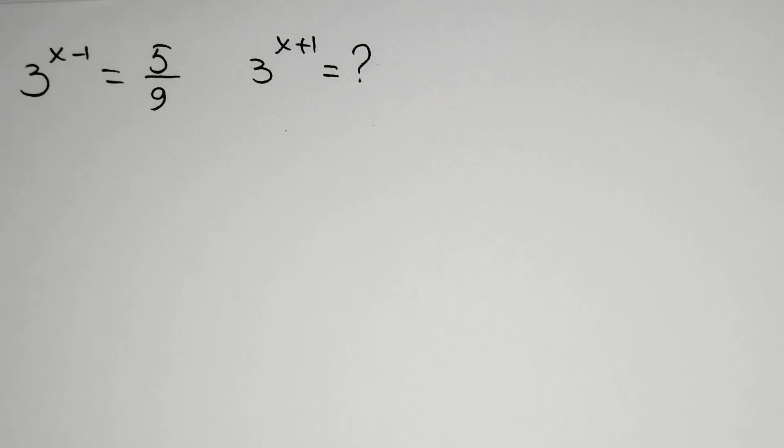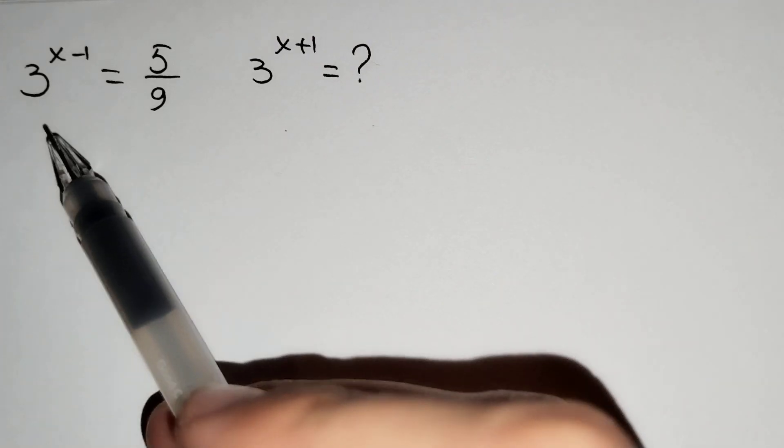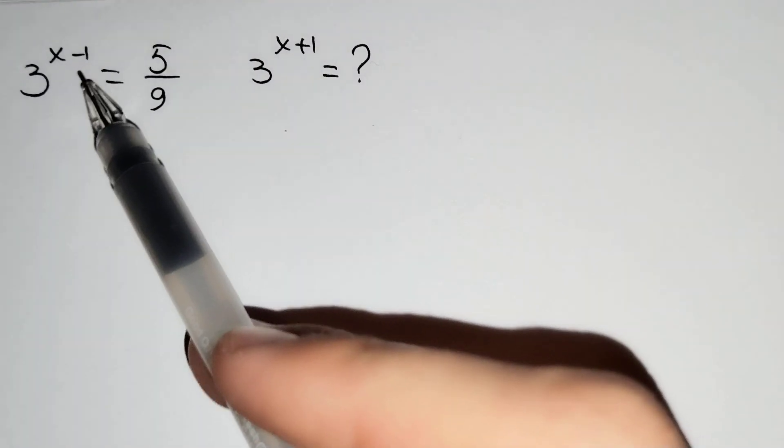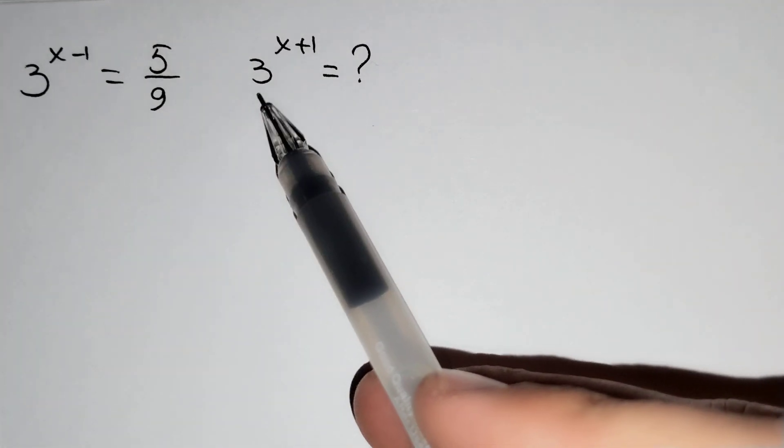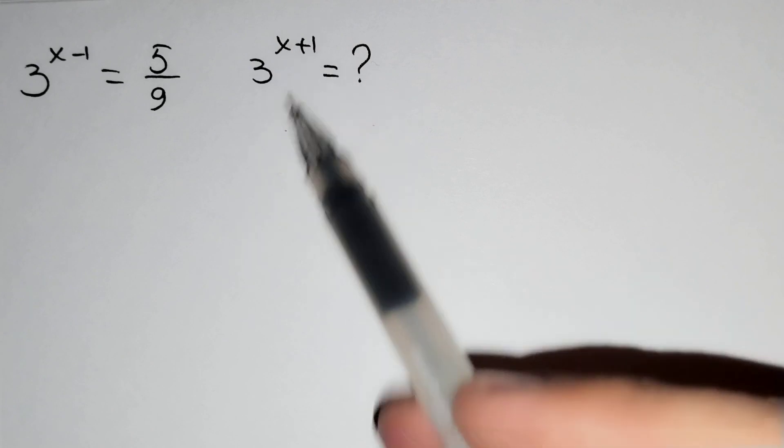Hi everyone, in this video you will learn how to solve this problem. 3 power x minus 1 equals to 5 over 9, and we should find 3 power x plus 1.